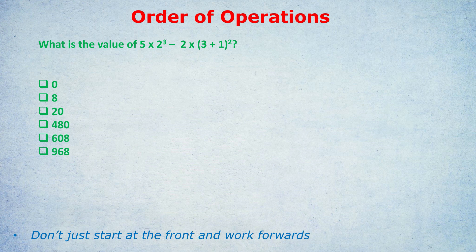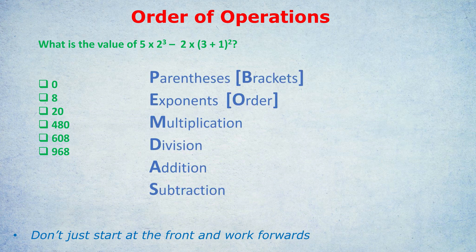Let's look at the first question: what is the value of 5 times 2 cubed minus 2 times (3+1) in brackets, squared? There are many options for where to start. Do we do 5 times 2 equals 10 first? No — we don't just start at the front and work forwards. That's what a lot of students do: they get 5 times 2 is 10, then maybe 10 cubed. That's a mistake.